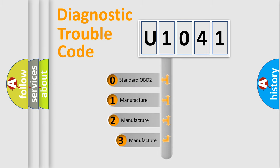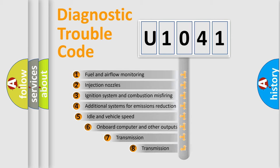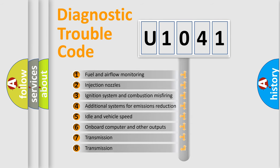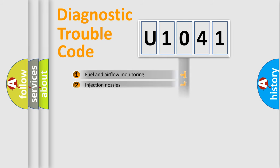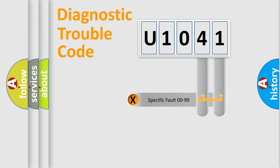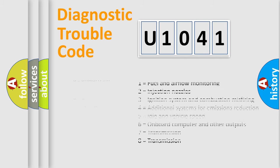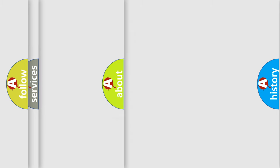If the second character is expressed as zero, it is a standardized error. In the case of numbers one, two, or three, it is a manufacturer-specific error. The third character specifies a subset of errors. This division is valid only for the standardized DTC code, and only the last two characters define the specific fault of the group — but only when the second character is zero.